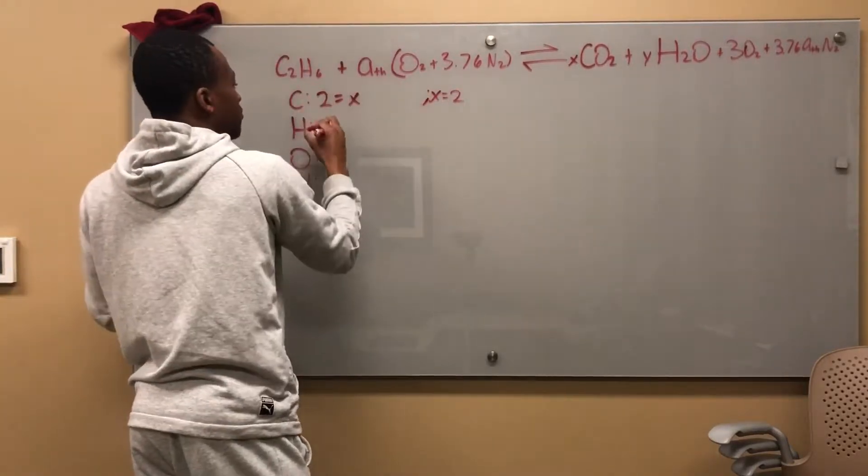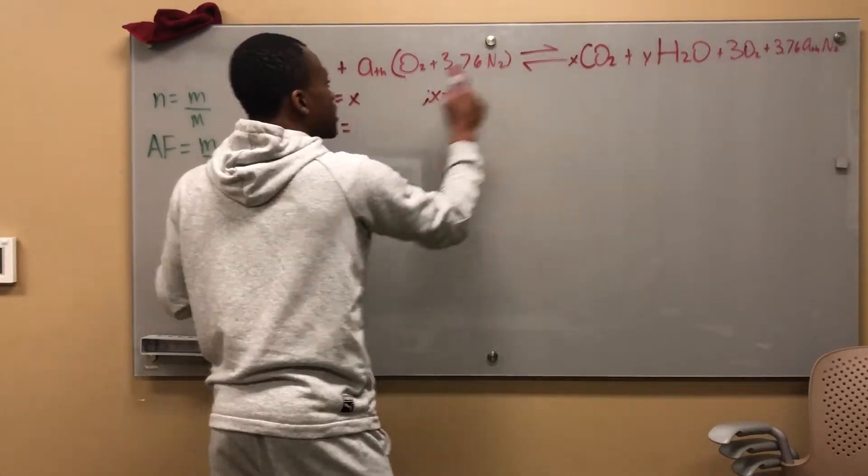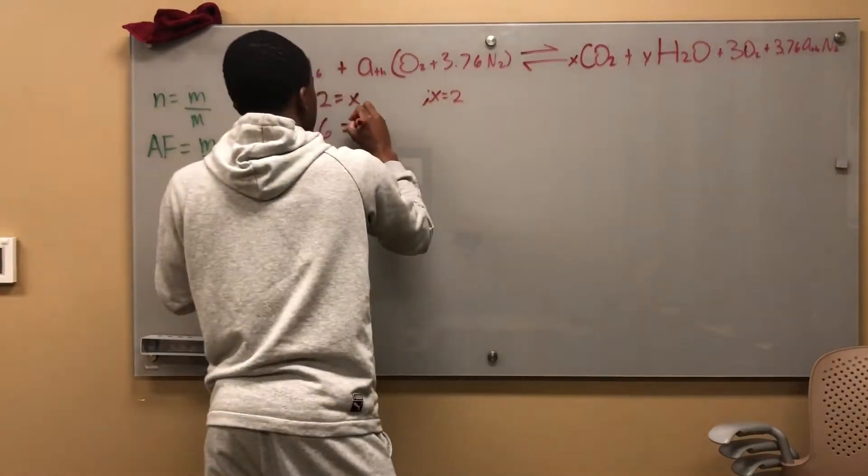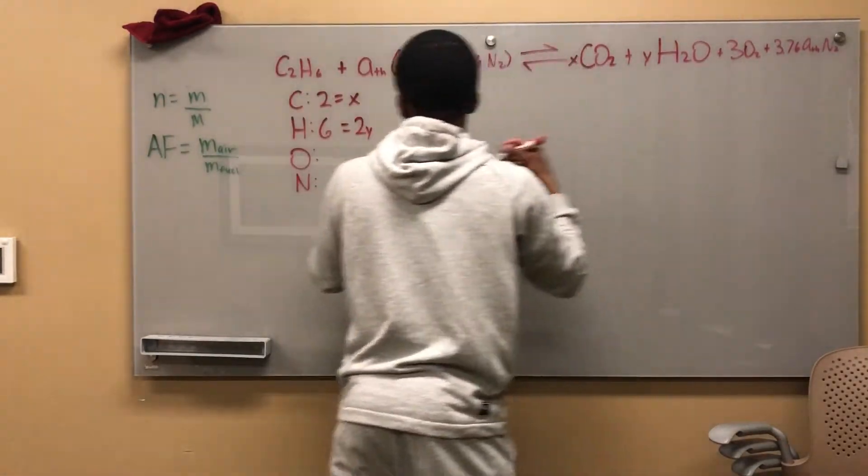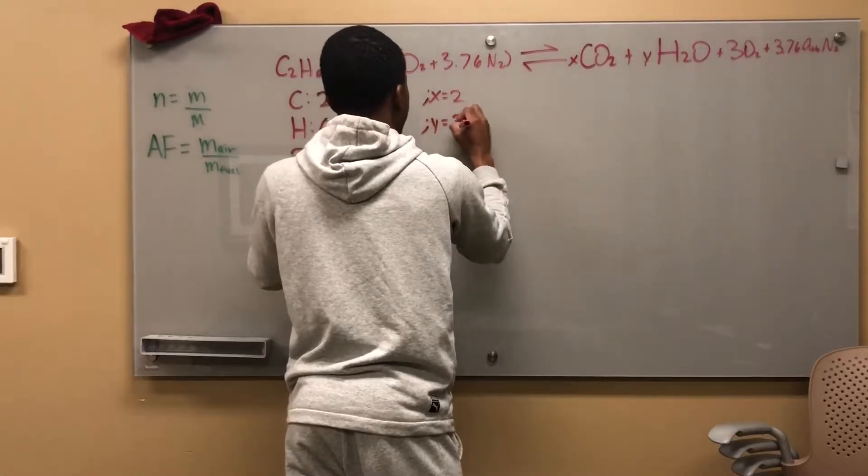I'm looking at H six, no more H on this side. So this equals, this is two times Y, and there's no more H. So solve for Y, Y equals three, right?